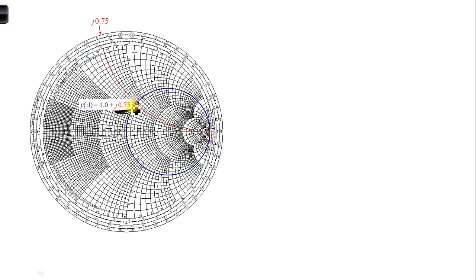But remember, we're on the Smith chart, and values are normalized on the Smith chart. So we first need to denormalize off of the Smith chart. So we're going to get Y at D is little yd over Z naught. And here we can plug in 1 plus J 0.75 over 450.